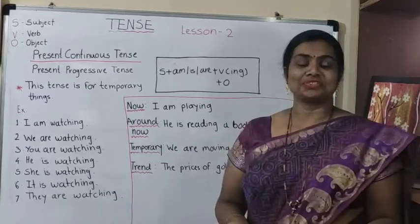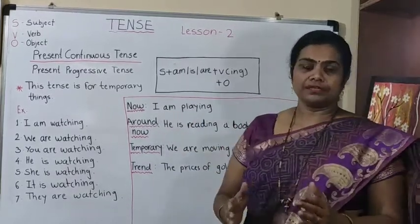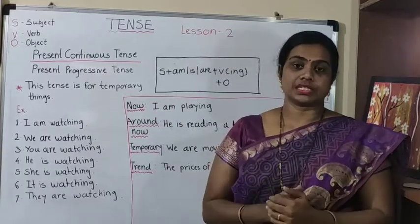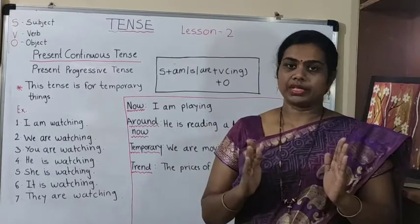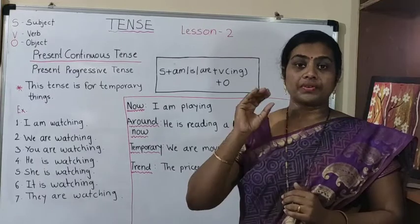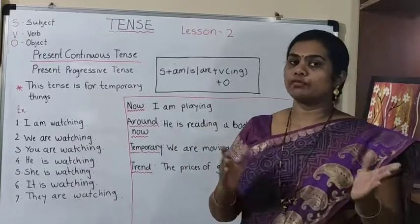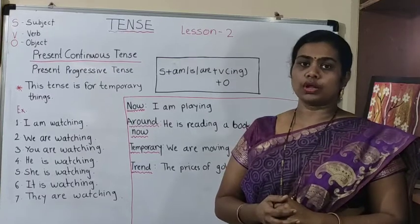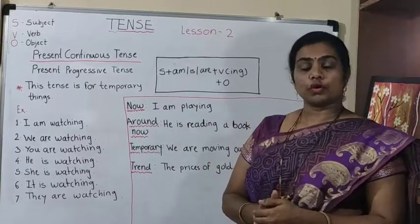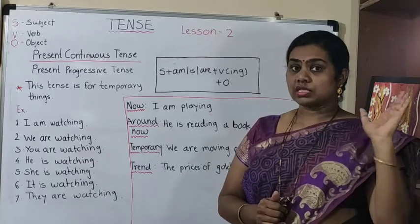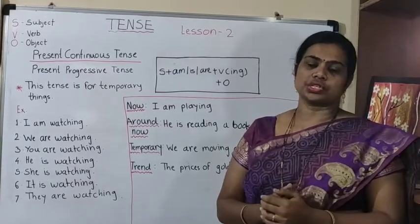Now let's look at the conditions when we can use the present progressive tense. First: if something is happening right now, you use present continuous tense — for example, right now you are watching me, you are studying. Second: 'around now' — when you have no exact confirmation of timing. For example, if your mother says 'you have been watching TV for two hours' and you are still watching, that's 'around now.'